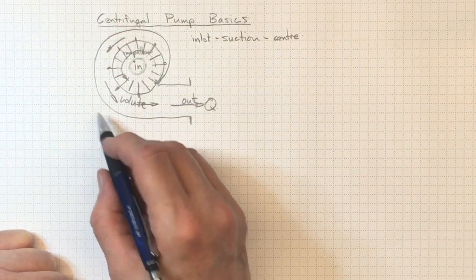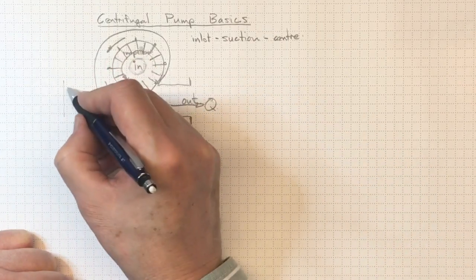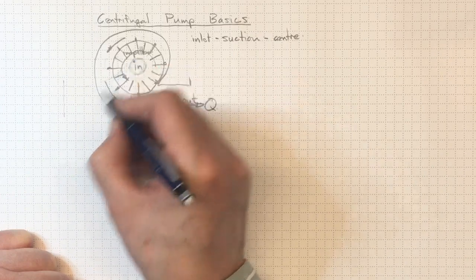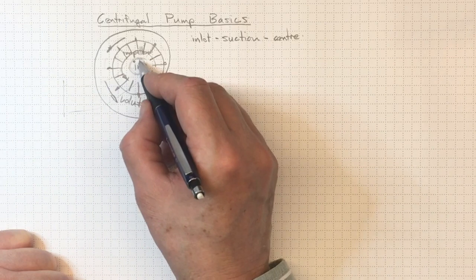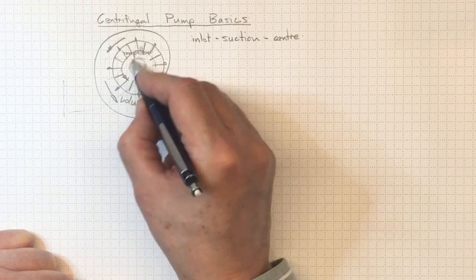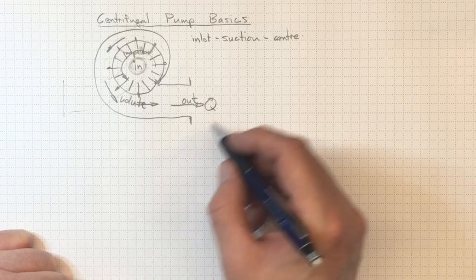And sometimes we'll have inline pumps, where the inlet flange might be over here. And somehow we've got a passage in the casing that is leading the liquid around the outside of the volute and into the middle here. And that's what we'll see in some of our configurations later on.